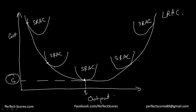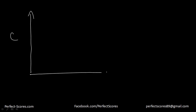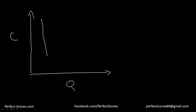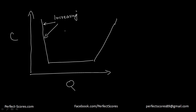If I break this graph into parts — this is the cost and this is the quantity — the long run average curve has three parts. In the first part, we get increasing returns to scale. What do we mean by increasing returns to scale? That means when you increase your output, your cost decreases. So in this region, as you increase your output, your cost decreases.